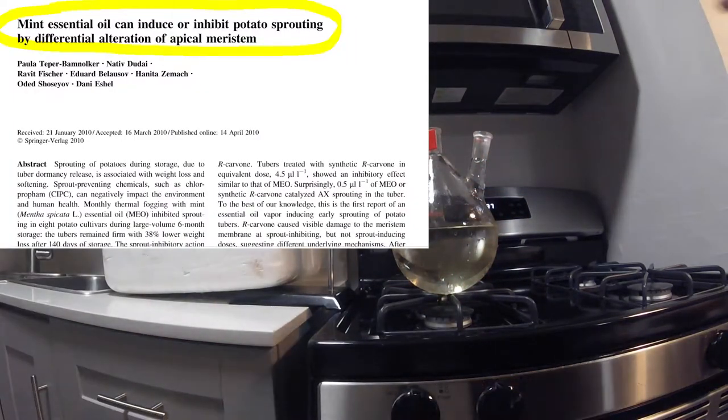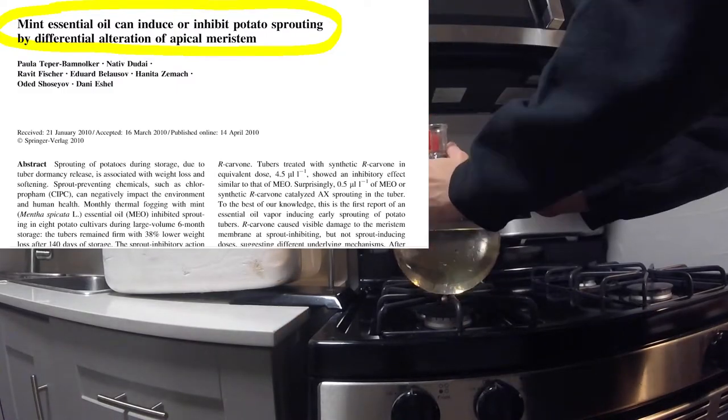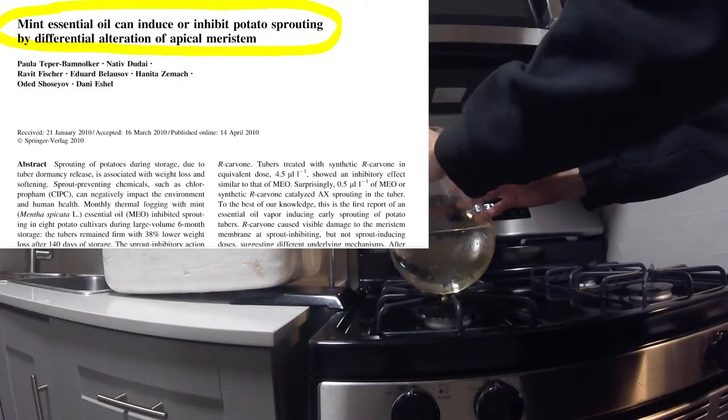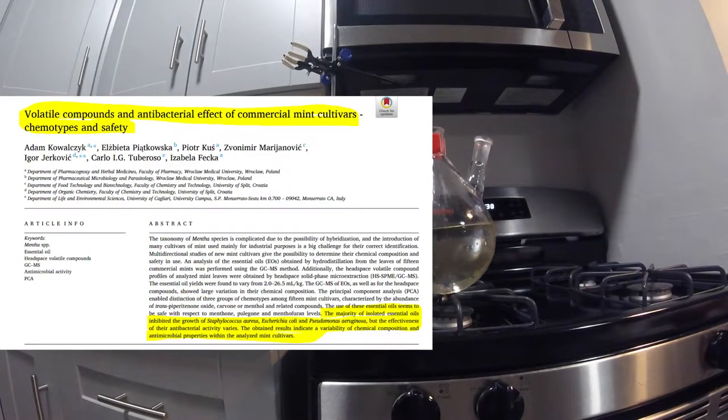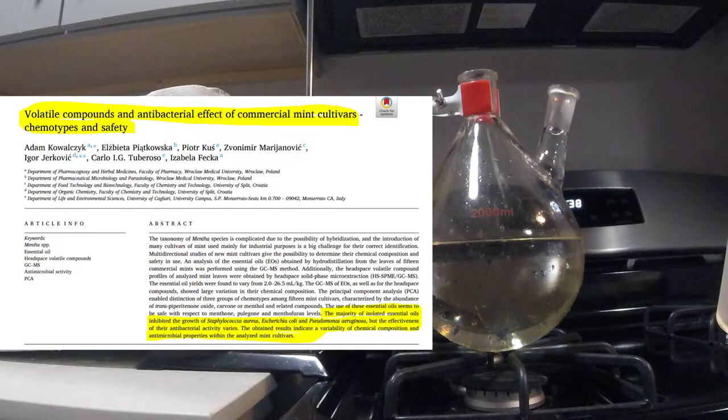Spearmint essential oil is used in agriculture. Because of the carvone it contains, it can be sprayed on potatoes at a grocery store to prevent them from sprouting. Both isomers also have antimicrobial properties effective against some bacteria and fungi.